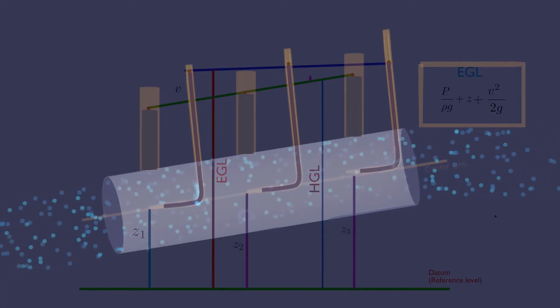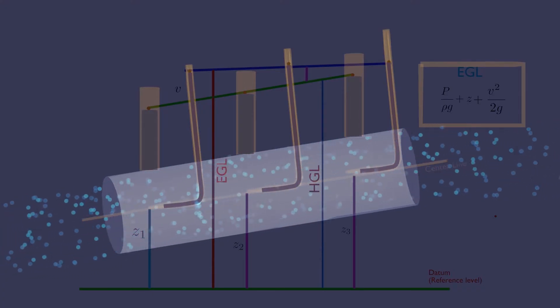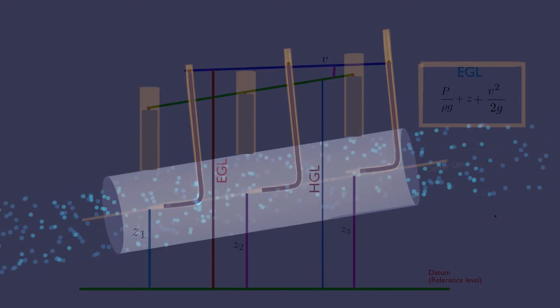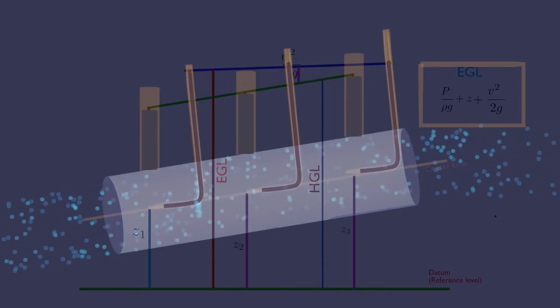The distance between EGL and HGL is the dynamic or velocity head. You can also imagine it as kinetic energy.